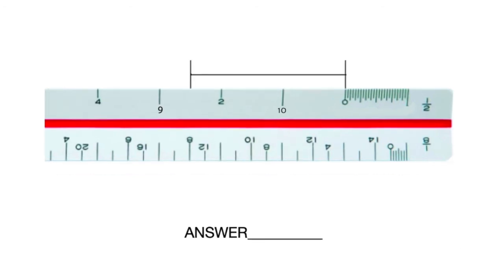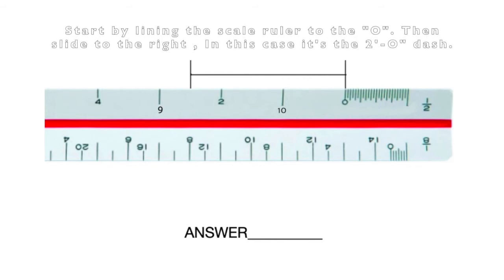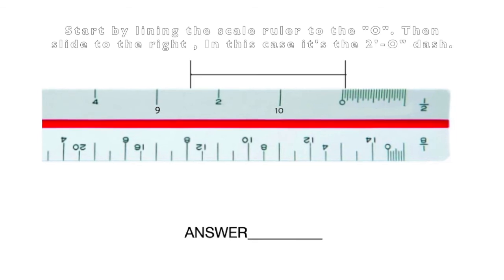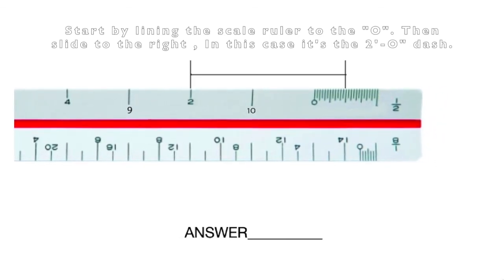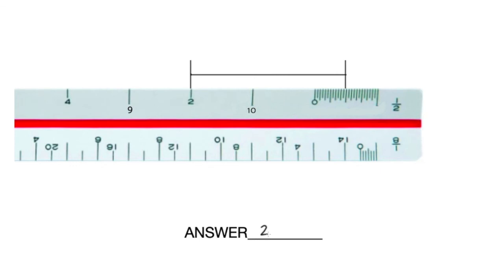Let's try another one. This line doesn't end on a dash. So we start by lining up the ruler to zero, and then you slide it to the right. In this case, it's the two foot dash. So we know that this line is two feet. But how many inches is it? Well, let's count. There's one, two, three, four, five, six. The answer is two foot, six inches.